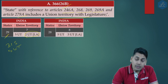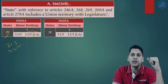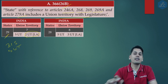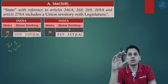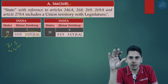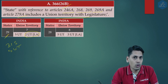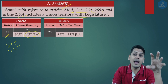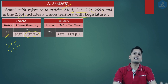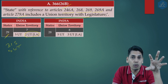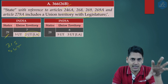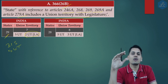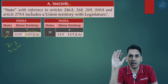After the reorganization, the state of Jammu and Kashmir was reorganized into the union territory of Jammu and Kashmir and the union territory of Ladakh. The union territory of Jammu and Kashmir is a union territory with legislature, while the union territory of Ladakh is a union territory without legislature.